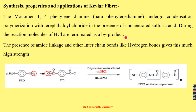For the synthesis of Kevlar fiber, the monomer used is 1,4-phenylenediamine (PPD), also called para-phenylenediamine. Para-phenylenediamine undergoes condensation polymerization with terephthaloyl chloride in the presence of concentrated sulfuric acid. During this reaction, hydrochloric acid is eliminated as a byproduct, thereby forming the Kevlar fiber, also known as PPTF. The presence of amide linkage and interchain hydrogen bonds gives much strength to the Kevlar fiber.